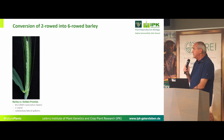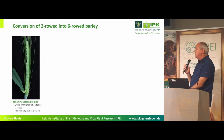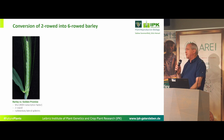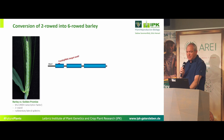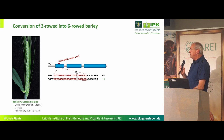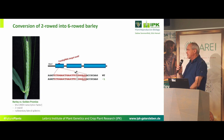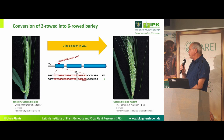The first example demonstrates the power of the method. Two-row barley is defined by the function of the vrs1 gene, and it was known that knocking it out should convert two-row to six-row barley — a tremendous change in morphology and yield potential. We identified a suitable target motif, created vectors, transformed barley, and in one example deleted just one base pair, interrupting the translational reading frame. The result was truly six-row barley — one of our very first examples.